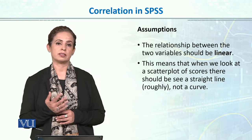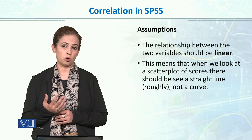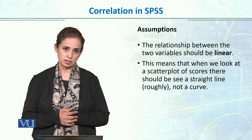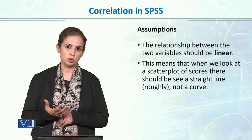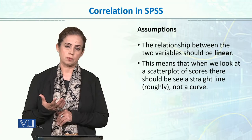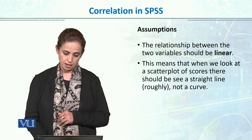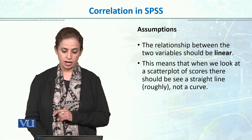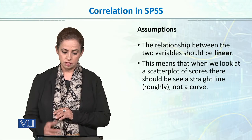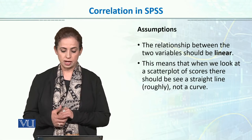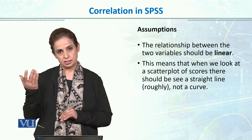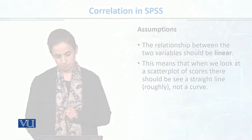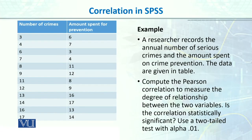There are different methods for non-linear relationships and other correlation techniques. But for Pearson, we assume that the data we assess are linear. This means that when we look at a scatter plot of scores, there should be a roughly straight line — a tendency to form a line, not a curve.